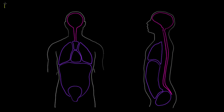Hey guys, today we're going to be taking a look at the body cavities and how to name and distinguish between them. Within the body, our organs and systems are protected and separated by membranes, and we call the inside area of those membranes a cavity. There is a dorsal body cavity which houses the membrane-enclosed structures of the back of our body, and there are the ventral body cavities which house the membrane-enclosed structures of the front of our body.